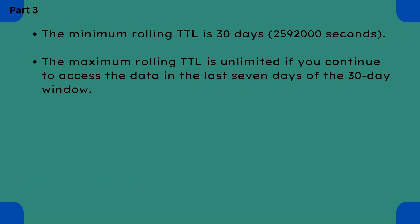The minimum value of rolling TTL is 30 days and the maximum TTL is unlimited. If you continue to access the data in the last 7 days of a 30-day window, that TTL will be extended again and again and it will behave like it's unlimited. That was all about rolling TTL.